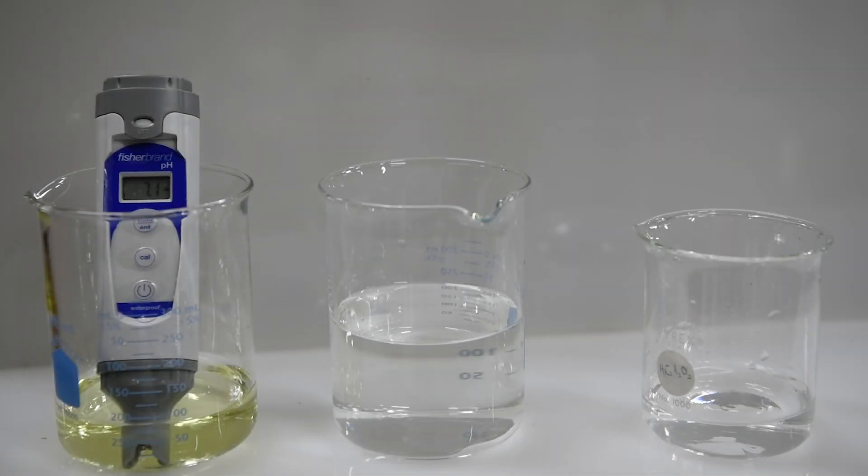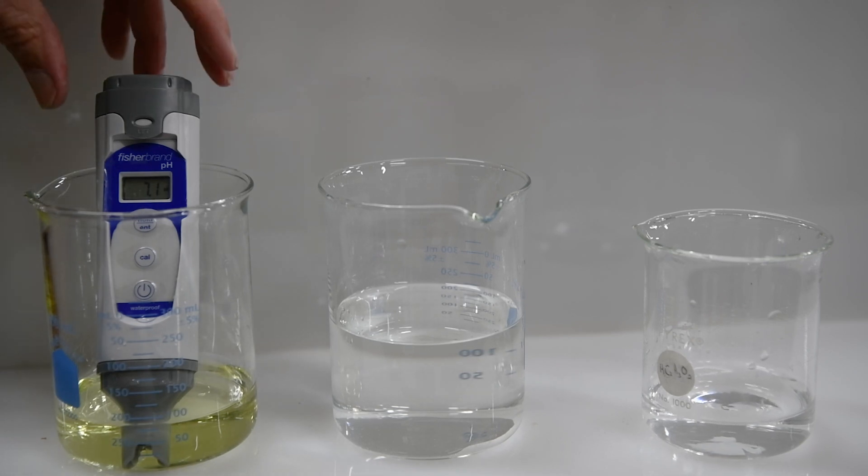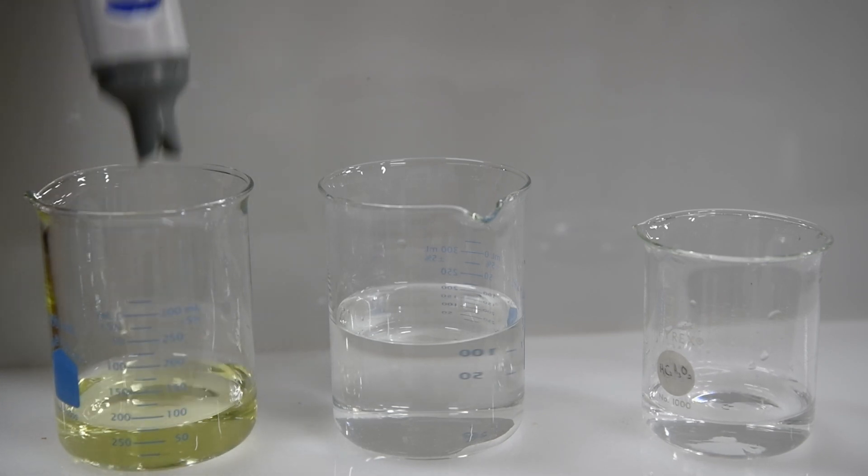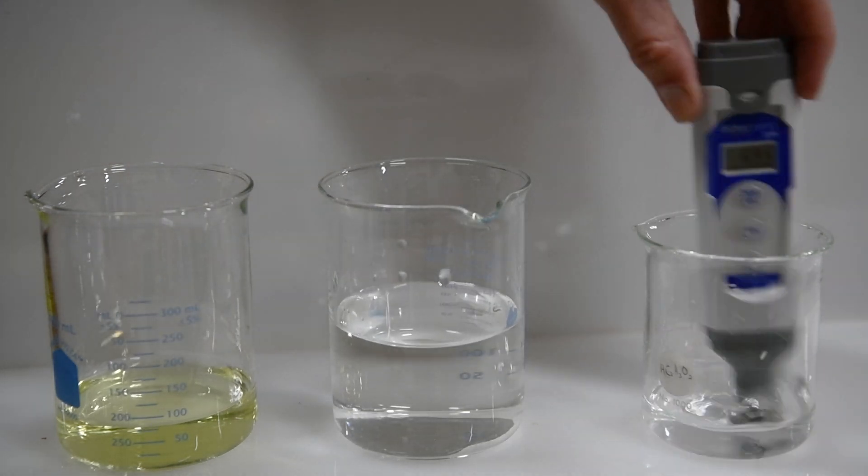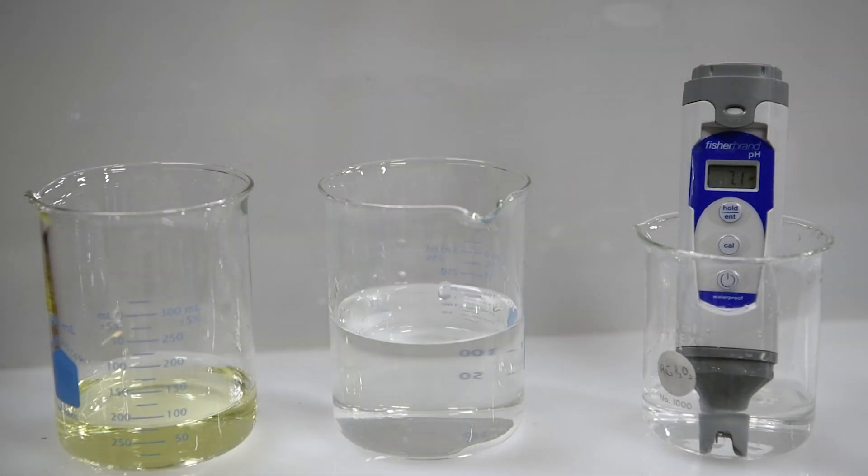All right, our next sample will be a sample of sugar, which I've dissolved in a little bit of water. So we'll rinse off our probe and put it into the sugar water solution. And it's got a pH, it looks like, of about 7.1, 7.2, so pretty close to neutral.